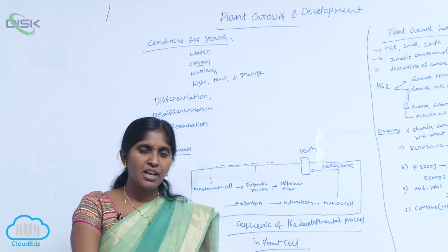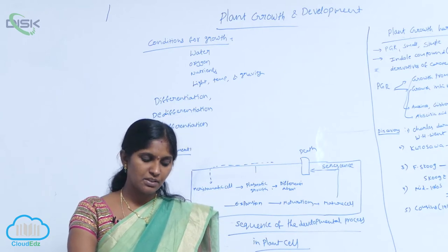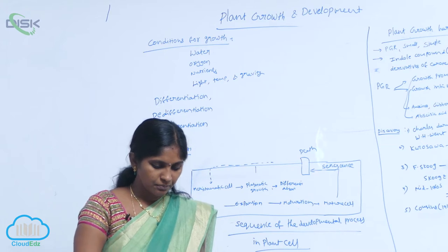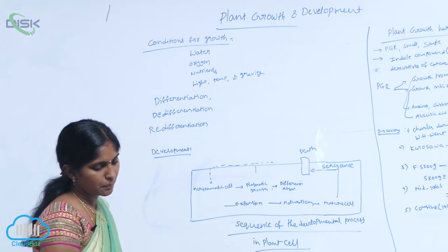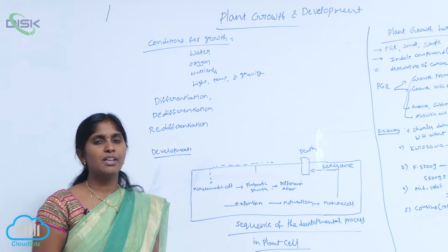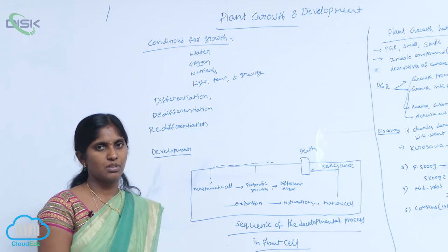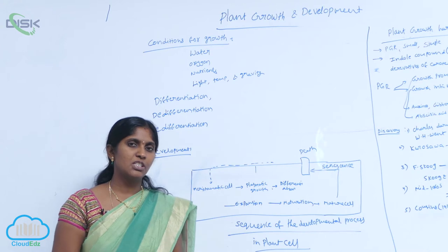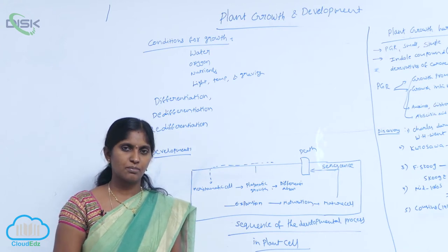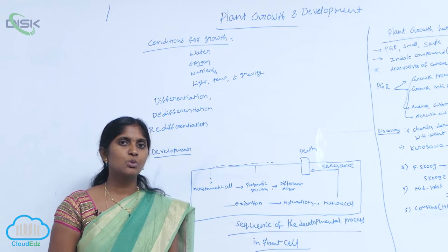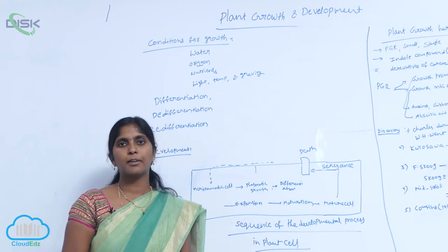Growth, differentiation and development are very closely related events in the life of plants. Development is regarded as growth and differentiation. Development means it is a change occurred throughout the life of the living organism, and the developmental changes lead to maturation of the plant.